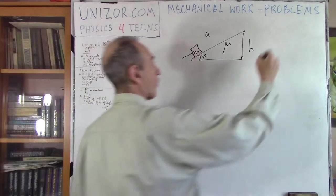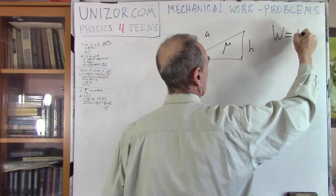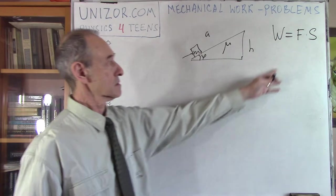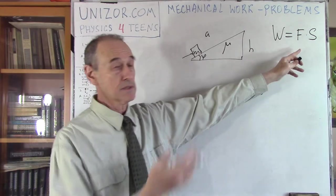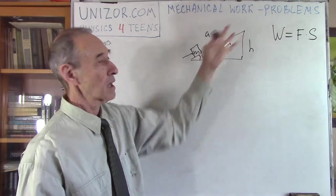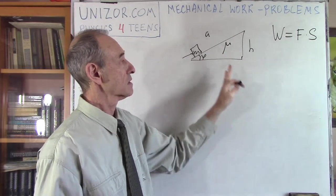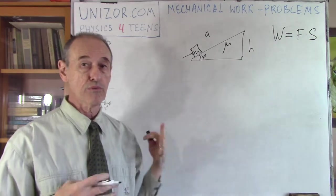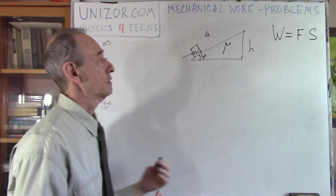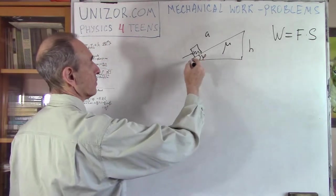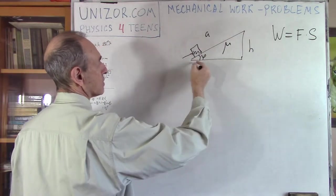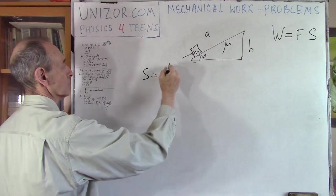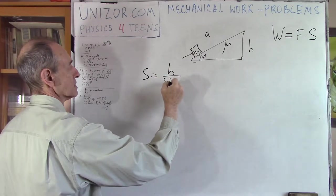Now, using these components of the movement and the friction, we have to calculate amount of work our force is performing, which is multiplication of the force. In this case, force is constant, obviously, because there is a constant acceleration. Everything is constant here, so the force is constant, so we just multiply it by the distance this force is acting.